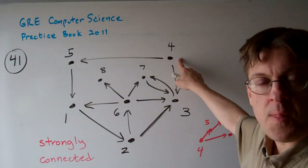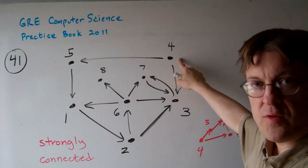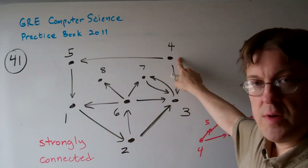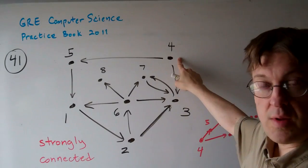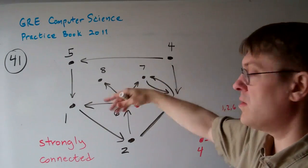So let's take, for example, vertex 4. No node can reach vertex 4, except vertex 4, right? It's a source, it's not a sink of information here.